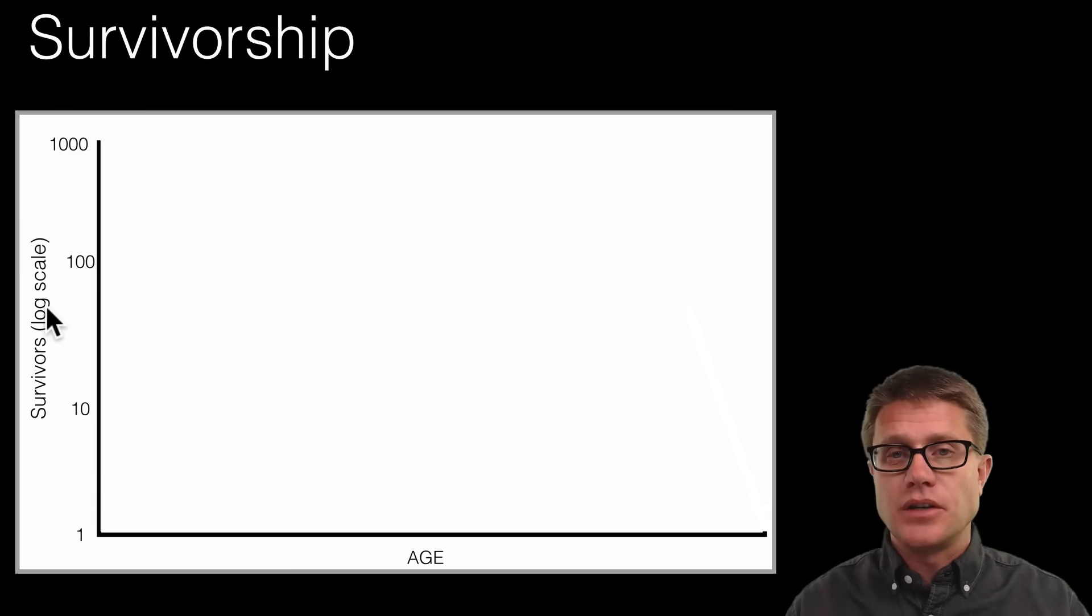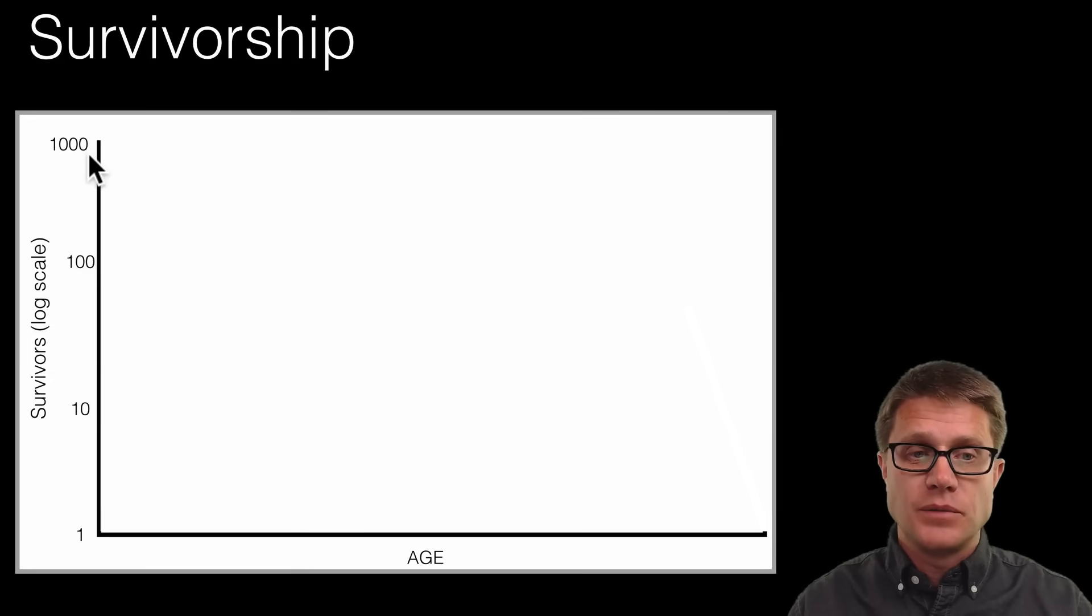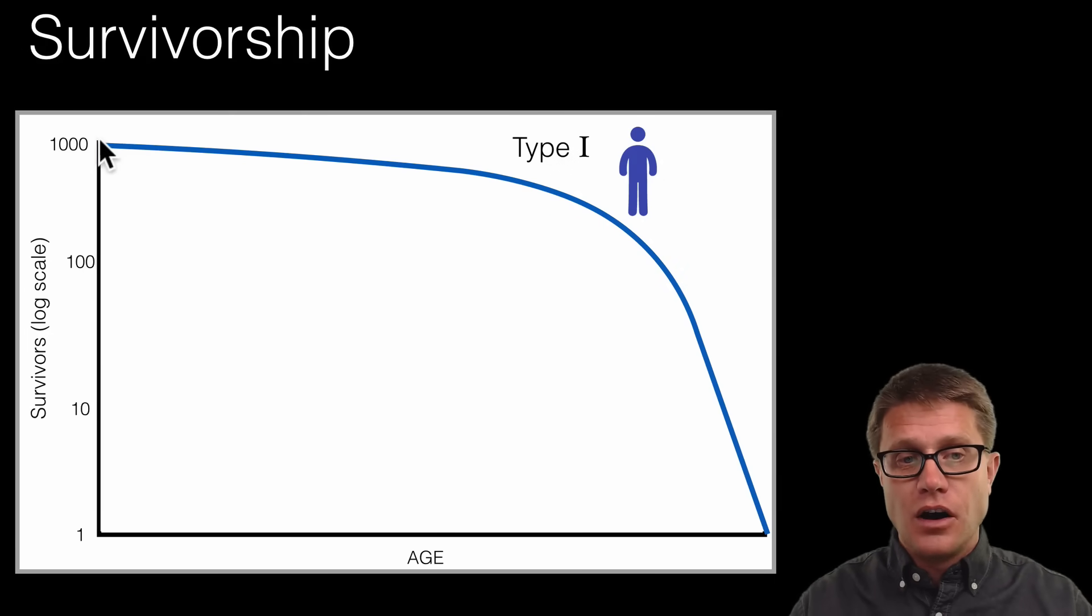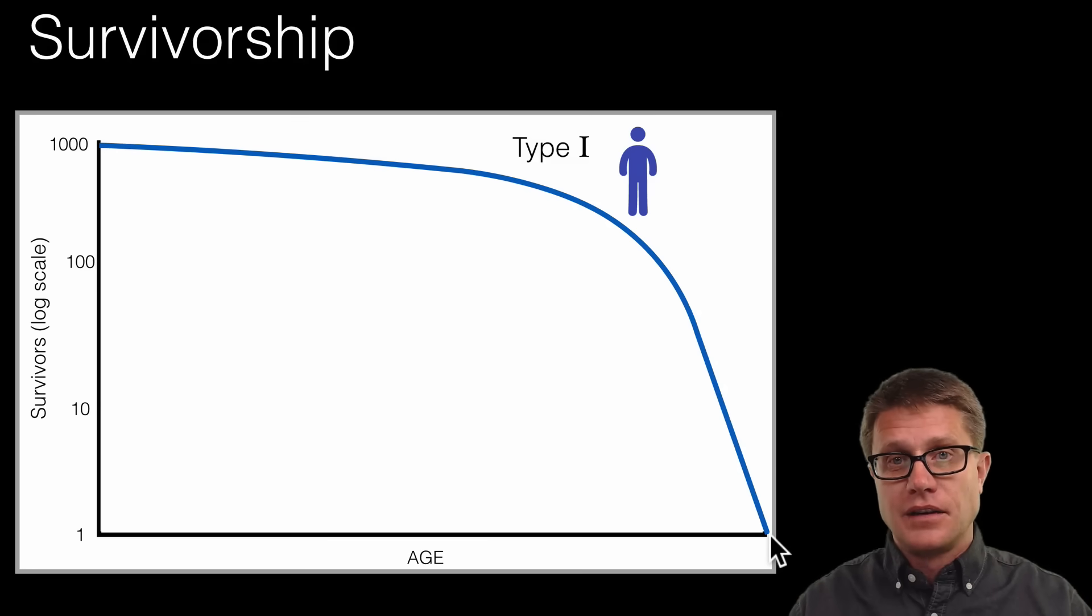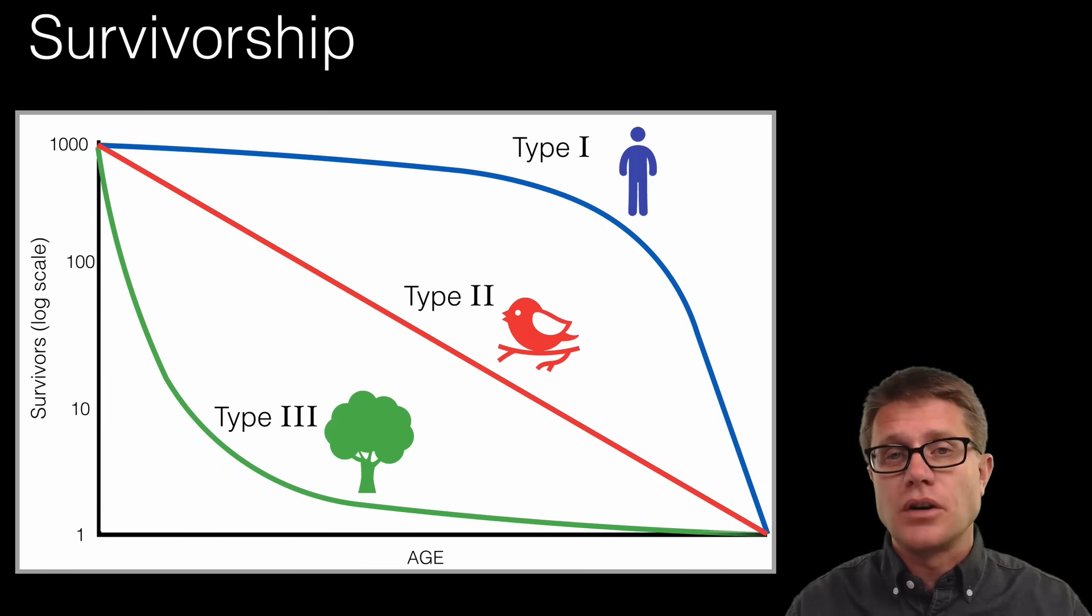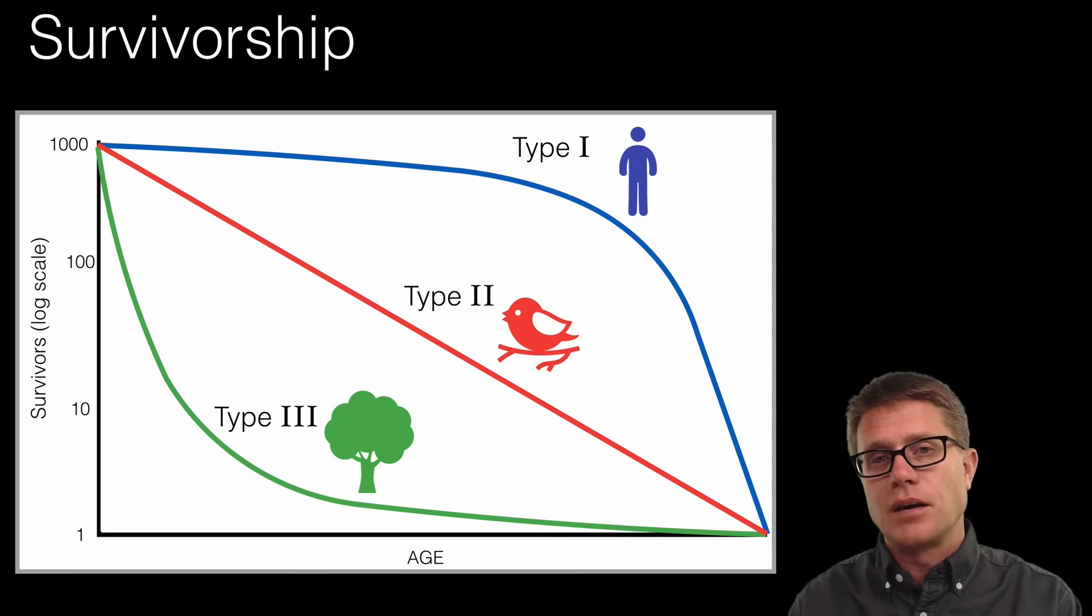Now a way to look at which strategies species are using is figuring out their survivorship. So we have time on the bottom and then we have the survivors on the side. So if we look at humans as a type 1 survivorship curve, what that means is when we are born, almost all of the humans survive. And then throughout their lifetime they all die right at the end. And so we give a lot of parental care to our offspring. Almost all of them survive. And then when we get into our 80s, 90s then we all die off. We could also have a type 2 survivorship curve. Songbirds are an example of that. From the moment they are born they are dying off at a constant rate. Or we could look at type 3. Those are individuals, like the acorns from a tree, almost all of them die. But a few of those survive and those make up the plants that we have.